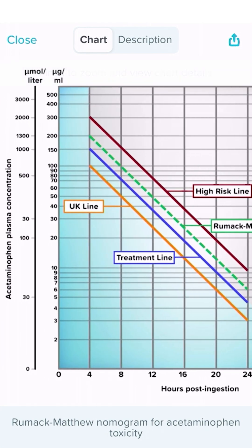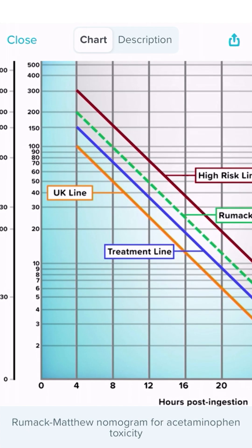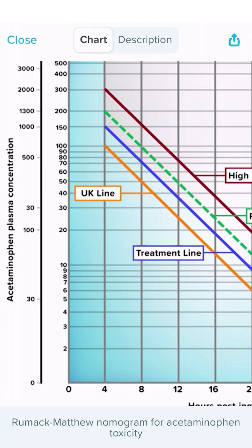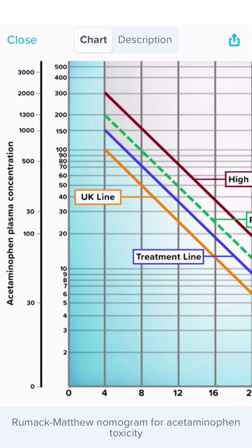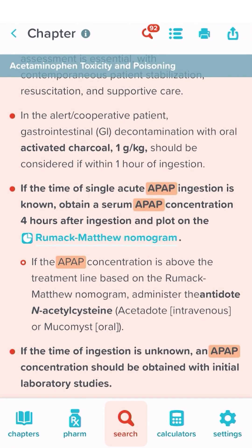Depending on which country you're in and the clinical situation, you might use a different line, but generally people use this green line. At four hours, if the level is above 200 micrograms per mL or 1000 millimoles per liter, you're going to initiate treatment. Our patient's level is 250, so we're going to start treatment with N-acetylcysteine.